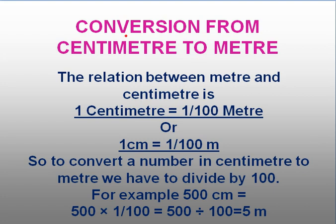Now for conversion from centimeter to meter: you have to convert centimeter, the smaller unit of length, to the bigger one which is meter. The relation is 1 centimeter is equal to 1 by 100th of a meter, because meter is a bigger unit. So to convert a number in centimeters to meters, we have to divide by 100. For example, 500 centimeters is 500 into 1 by 100, that is 500 divided by 100, which equals 5 meters.